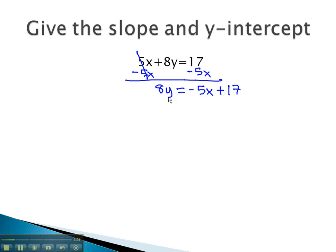To get the y alone, we will divide both sides by 8. As we do, we will remember that it is important to divide each and every term by the 8. We now have y equals negative 5 eighths x plus 17 eighths.